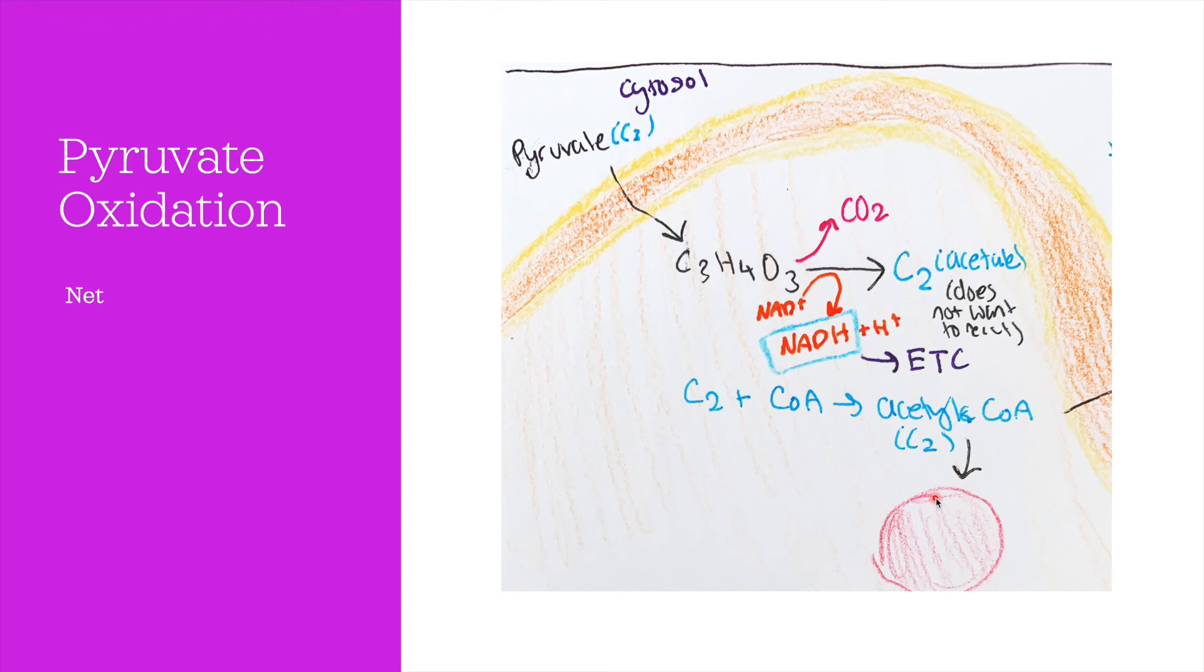Keep in mind that this process occurs twice because there are two pyruvate molecules coming from glycolysis. The final products of this process are two acetyl-CoA molecules, two CO2 molecules, and two NADH molecules. Again, this is because there are two pyruvate molecules to begin with.